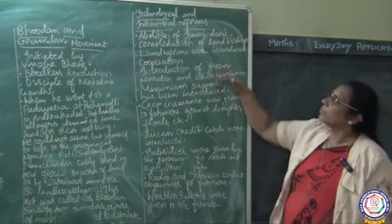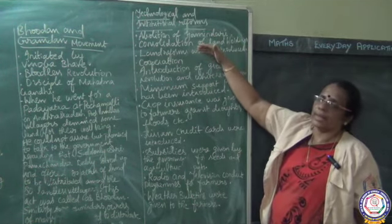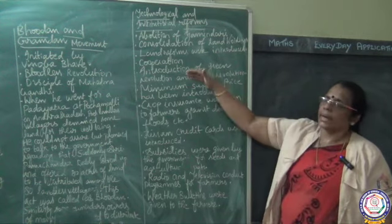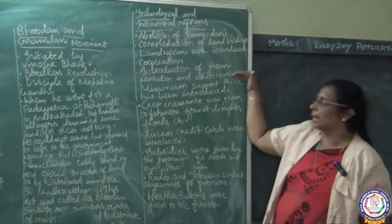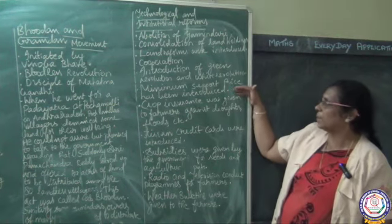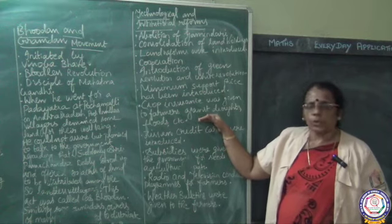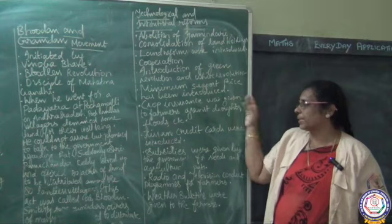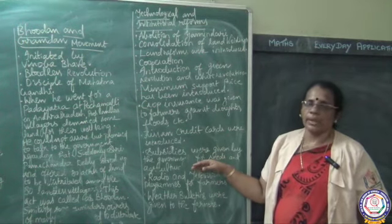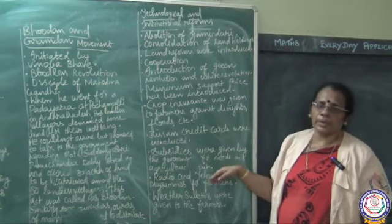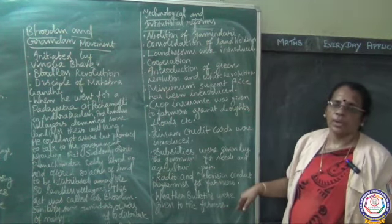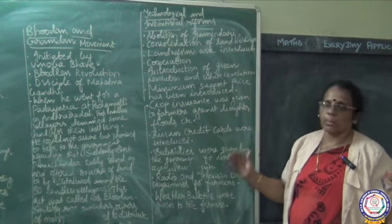To recap the technological and institutional reforms: abolition of zamindari; consolidation of land holdings; land reforms; cooperation; introduction of Green Revolution and White Revolution; Minimum Support Price to protect farmers from speculators; crop insurance schemes against droughts and floods; Kisan credit cards; subsidies for seeds and agricultural inputs; radio and television programs for farmers; and weather bulletins providing information about rain, cyclones, etc.